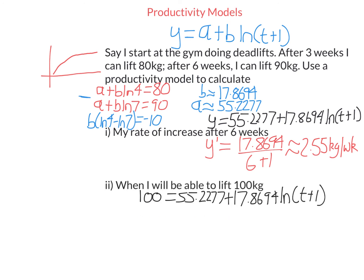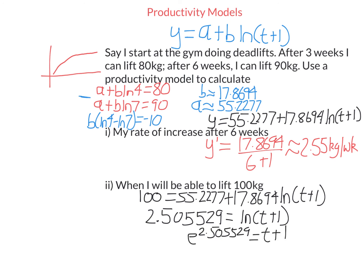To find when I can lift 100 kg, substitute y = 100 and solve for t. Subtracting 55.2277 and dividing by the coefficient gives 2.505529 equals ln(t+1). Raising e to both sides, we get e to the power of 2.505529 equals t + 1. Putting this in the calculator and subtracting 1 gives t approximately 11.25 weeks — round up to 12 weeks. So in the 12th week, I will be able to deadlift 100 kilos.